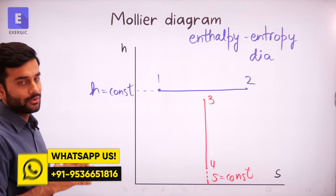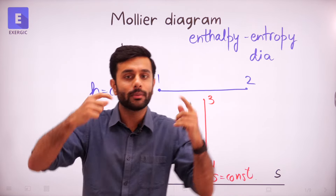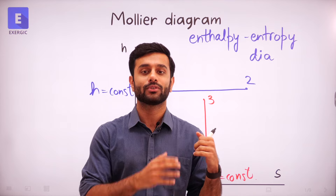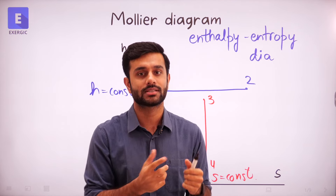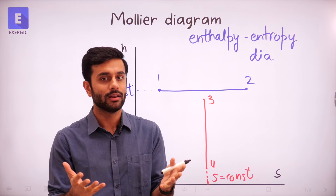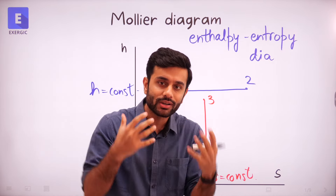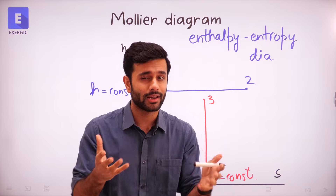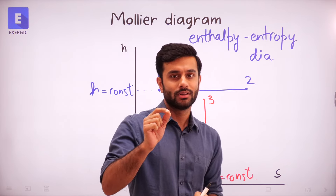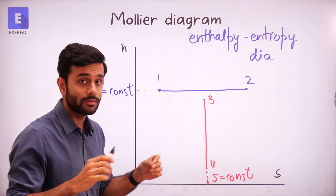One thing becomes very clear when you look at this diagram: in other diagrams, if you had to represent an isenthalpic or isentropic process, it was not a straight line — it was a curved line, which is slightly difficult to manipulate and calculate values from. For example, an isentropic process is a very common type of process; we want many processes ideally to be isentropic to have maximum output. So if an isentropic process is going on and you need to find out delta H for that process, it is extremely simple in this case.